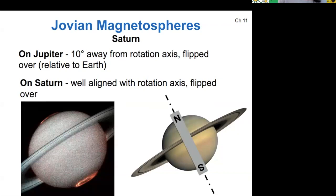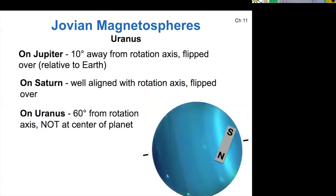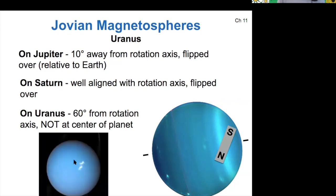On Uranus, first of all, the magnetic field is 60 degrees off the rotation axis. But second of all, the field isn't even centered at the center of the planet. This is a completely bizarre effect. It does have auroras as well, and we don't really understand why it's not aligned or why it's off center.